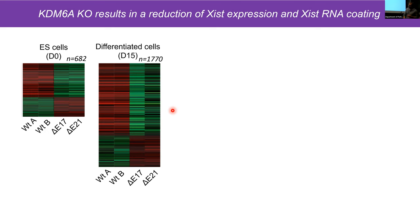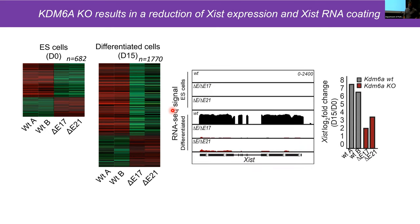Remember, the XIST gene is upregulated during differentiation to initiate X inactivation. When we looked at XIST expression profiles, in undifferentiated ES cells both wild-type and knockout clones had no XIST expression — as expected since it doesn't get turned on until differentiation begins. In differentiated cells, we see a marked increase of XIST expression in wild-types. In the knockout clones, XIST fails to upregulate, resulting in about a 7.5-fold increase in wild-types versus around 2.5 to 3-fold in knockouts.